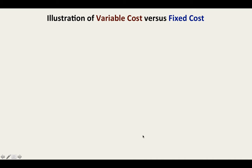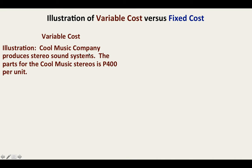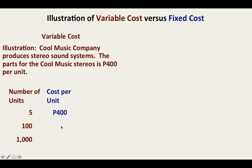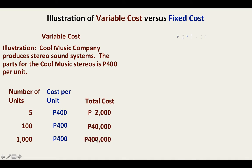Let us illustrate variable cost versus fixed cost. Cool Music Company produces stereo sound systems. The parts for the Cool Music stereos cost 400 per unit. If we are producing 5 units, 100 units, or 1,000 units, the total variable cost is dependent on the number of units. Total variable cost is 2,000 for 5 units, 40,000 for 100 units, and 400,000 for 1,000 units. If production increases, total variable cost likewise increases in direct proportion. The cost per unit remains constant — that is variable cost.